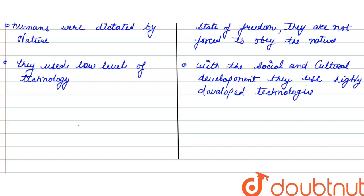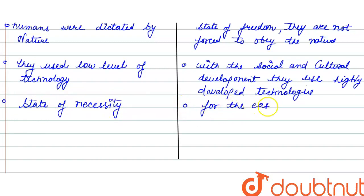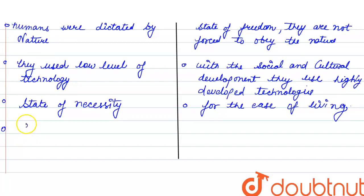They would develop something that can be used for them. So primitive societies used a low level of technology. But our societies and technologies are developing, so we are using highly developed technologies. The naturalization of humans is termed as environmental determinism — because nature worship and environment. So here is environmental determinism.